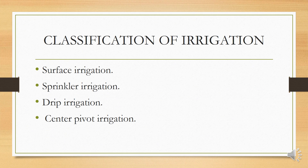Irrigation is classified into four types: the first one is surface irrigation, then sprinkler irrigation, then drip irrigation, and the last one is center pivot irrigation. Now we will discuss each type of irrigation one by one.